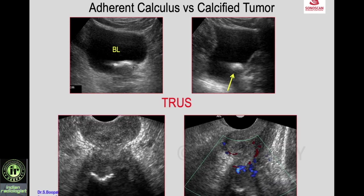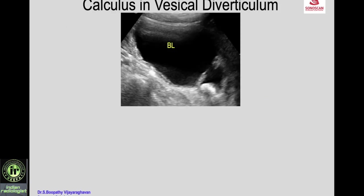For an adherent calculus or calcified tumor that does not shift with position in a male patient, TRUS is helpful — it propagates ultrasound from the opposite side. You see the prostate on transrectal ultrasound, then the bladder, and you see a polypoid mass in the bladder with concretions on the surface (seen as a fixed calculus). On color Doppler, flow is seen in the mass, confirming it is actually a transitional cell carcinoma with concretions on the surface and not a calculus. There may also be a calculus in a vesical diverticulum.